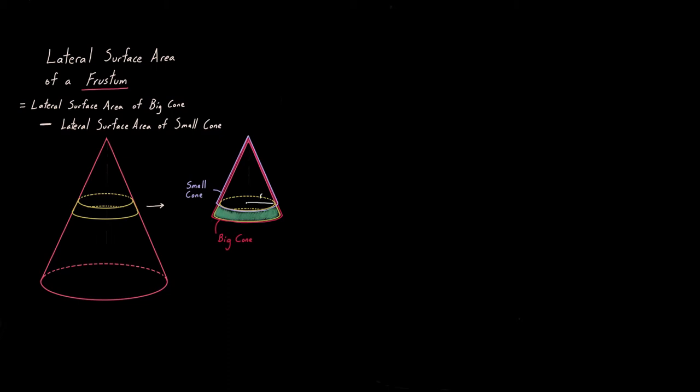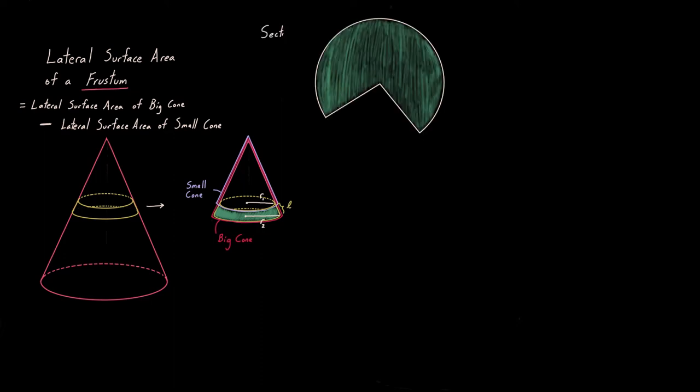And there I'm shading my frustum in green and of course this extends right around to the back. Let's put some variables R1, R2 are the radii of the top and the bottom circle of the frustum, and a little length there, script L.